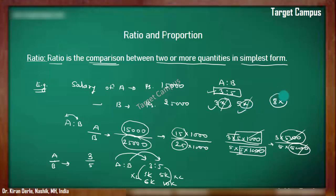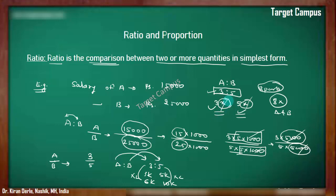Why 3x and 5x? These are the values we consider because to get this simplified ratio, we must have cancelled out something common between them. So whenever we get 3 is to 5, we consider the actual values as 3x and 5x. If there are total 8x, A's value is 3x and B's value is 5x — meaning A gets 3 parts and B gets 5 parts of the total 8 parts. This is the basic of ratio and proportion.